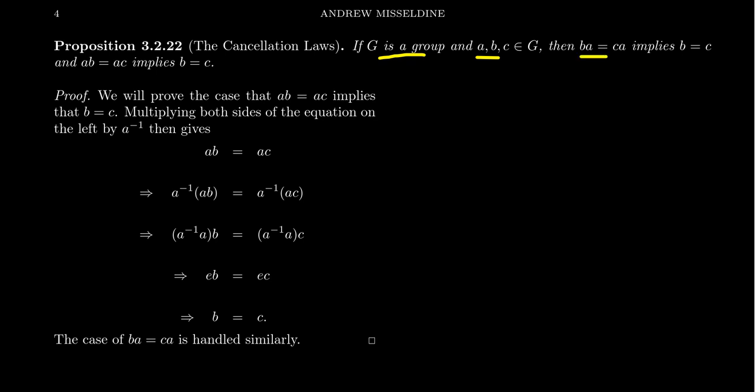Notice that a is the same thing on the back here. So if ba equals ca, this actually implies that b equals c. The only way that ba can equal ca is that b actually equals c in the first place. This is what we call right cancellation.